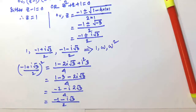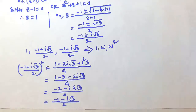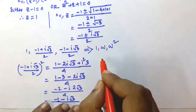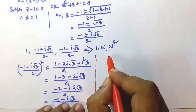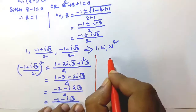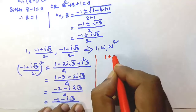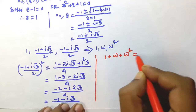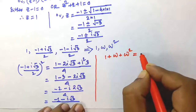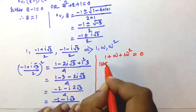Now we shall see some important properties. The sum of all the cube roots of unity is equal to 0, that means 1 plus omega plus omega squared is equal to 0.